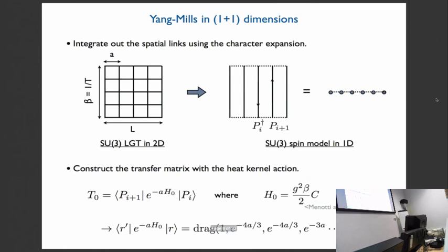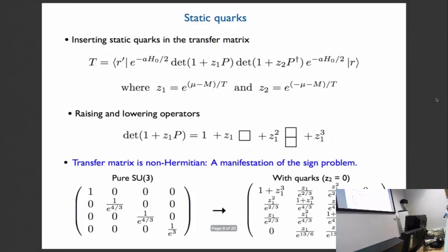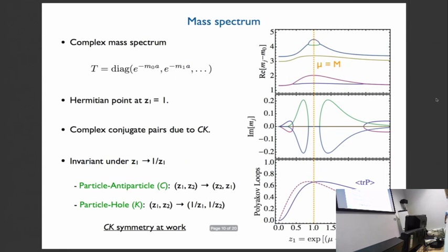I just want to emphasize, I forgot to mention that this is a transfer matrix in a spatial direction. It's really in the statistical, you know, similar to Ising model, and it's not in the temporal direction.